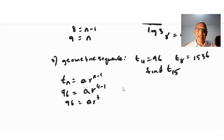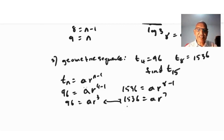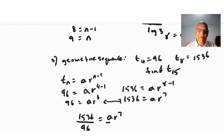For T8 = 1536: 1536 = a · r^(8-1), giving equation two: 1536 = a · r^7. We now have two equations with two unknowns, a and r. Since these involve multiplication, we cannot use substitution or elimination directly — instead, we divide equation two by equation one: 1536 / 96 = (a · r^7) / (a · r^3).